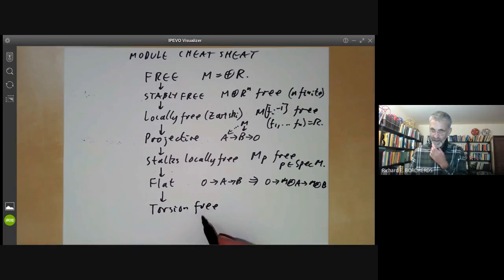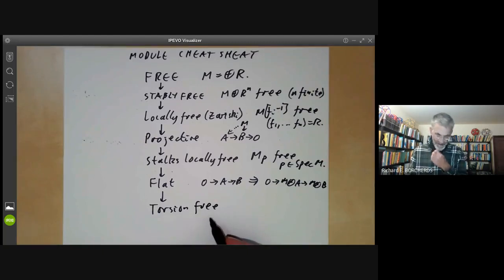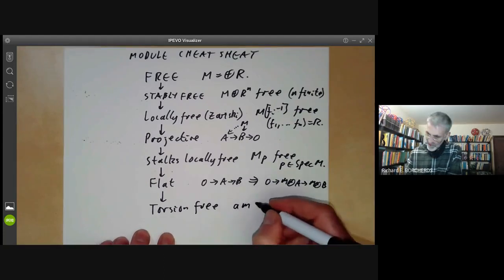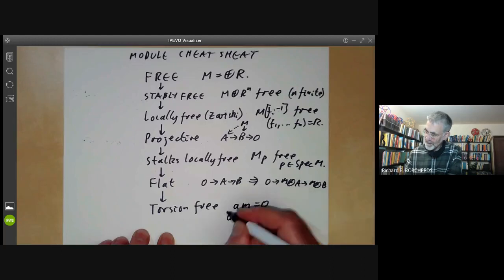If you're working over a ring that isn't an integral domain, there are several slightly different notions of torsion free. So one might say that if A M is equal to naught for A regular, in other words, not a zero divisor, this implies that M is equal to zero.